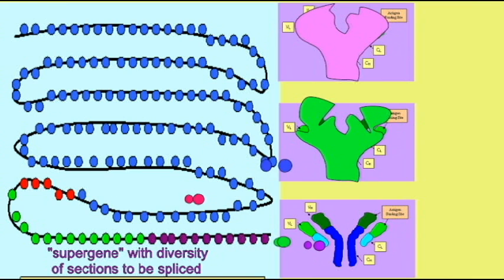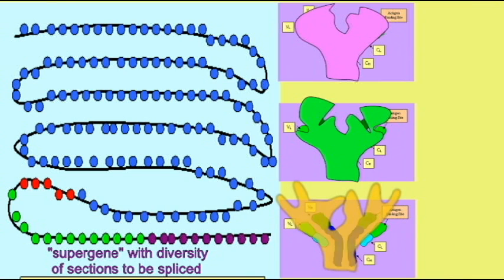Therefore, there are a number of alternate possibilities for a specific spot on an antibody molecule, and which one is inserted is a random assortment.